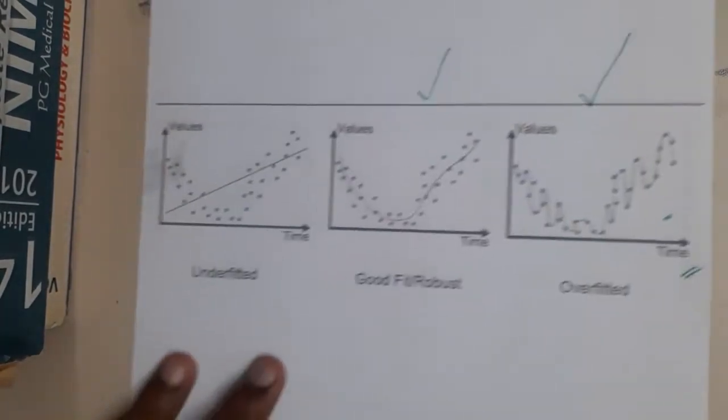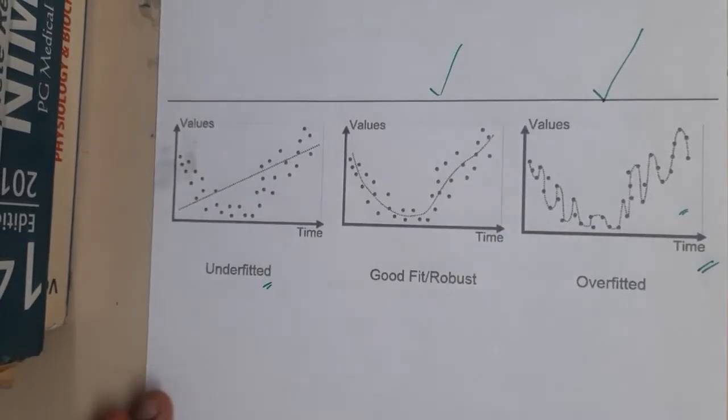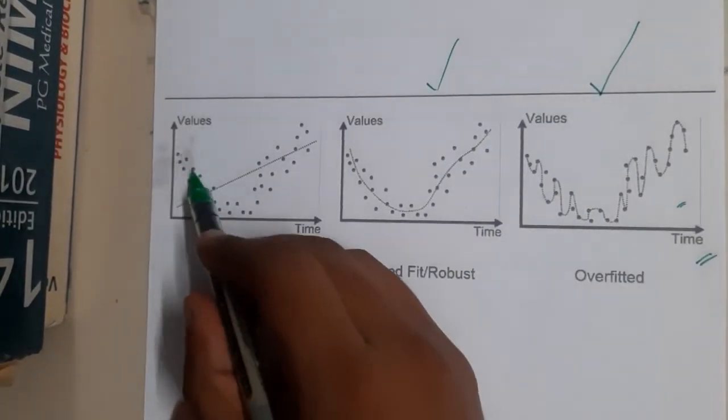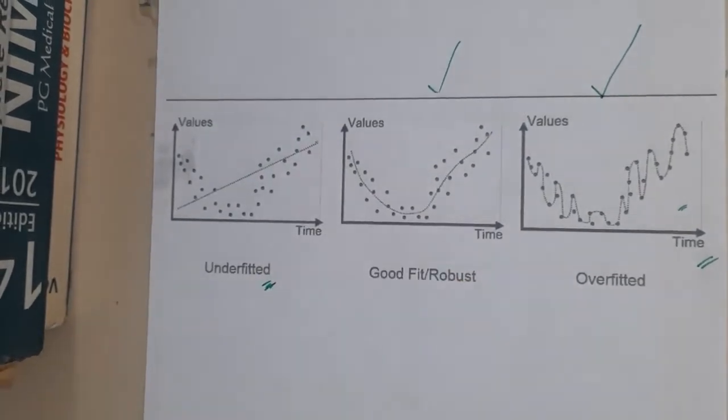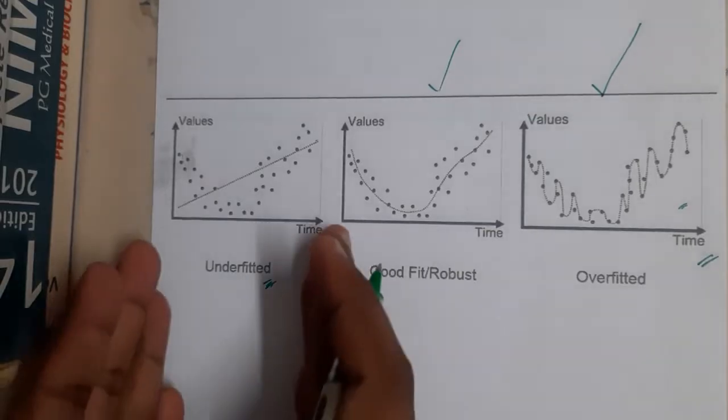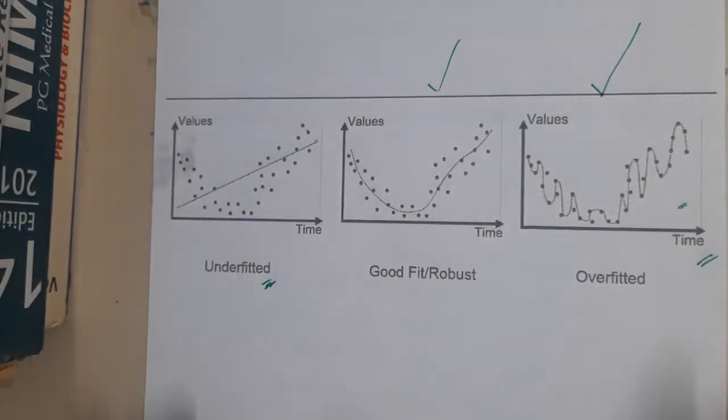When your graph is not touching any point—see here the points started from here to here and the line is going from here—that's not a good thing. That is an underfitted graph.